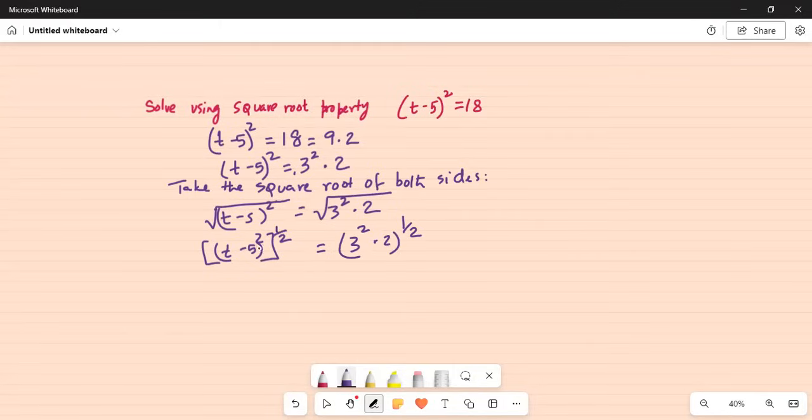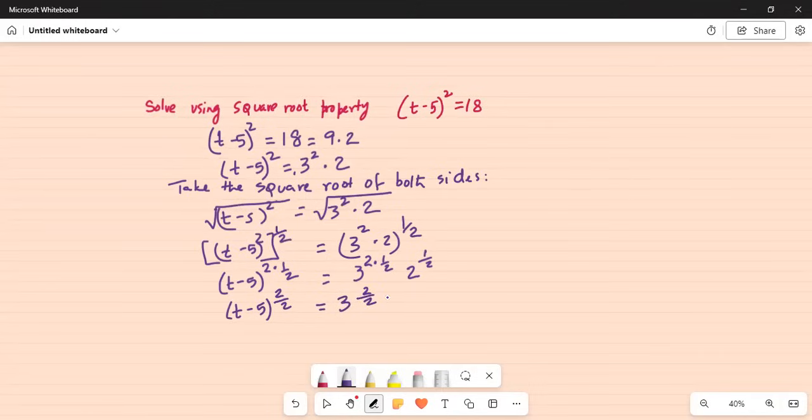So, (t-5)² times 1/2. Now rule of exponent is that they get multiplied. So (t-5)² times 1/2 is equal to 3² multiplied by 1/2 and 2^(1/2) because 2 originally exponent was 1, 1 times 1/2 is 1/2. Now this is t-5, 2 times 1 is 2, divided by 2.